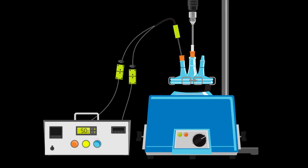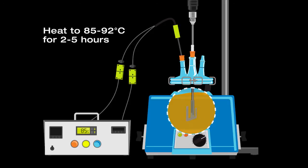Set the temperature control to 85 degrees Celsius. Begin to stir the grease mixture, carefully keeping the heat between 85 and 92 degrees Celsius. Monitor for two to five hours until the grease is formed.